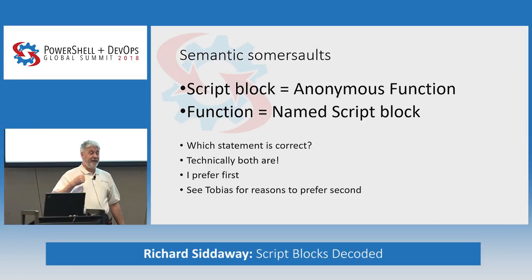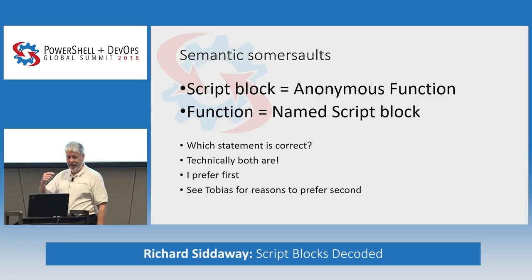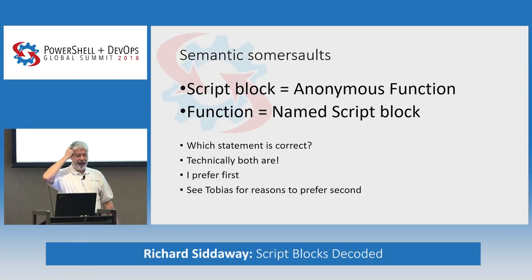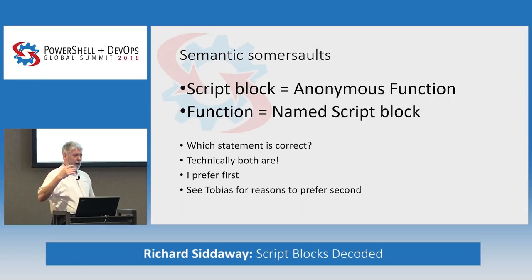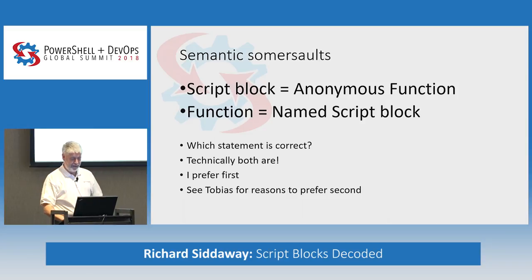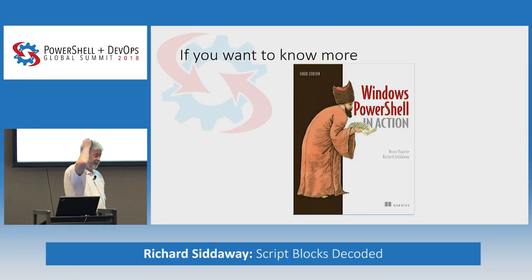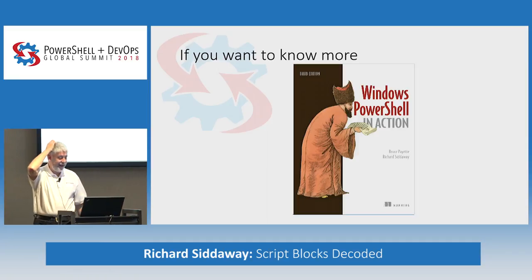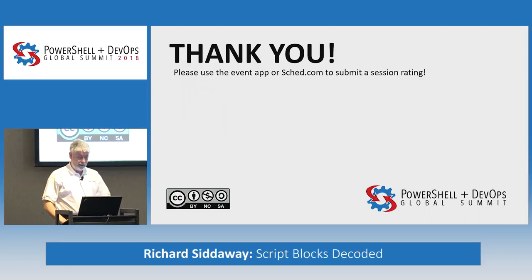If you know Tobias Beltner, the German MVP who runs the German conference - he was our technical editor on PowerShell in Action, and I lost track of the number of emails we sent backwards and forwards about this. He prefers the second. If you want to know why, go to Europe and see Tobias. So a script block is an anonymous function - that's the one I think is correct, and you'll see why when we get further through. I recommend Windows PowerShell in Action. Since I wrote it - helped write it - and it helps feed my children. Please go buy it. And with that, I suppose I better do some demos.